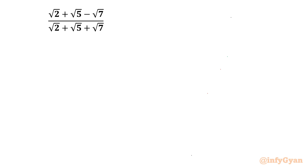Hello everyone, welcome to InfiJarn. In this very powerful video on algebraic expressions, we are going to simplify one rational expression: square root 2 plus square root 5 minus square root 7, over square root 2 plus square root 5 plus square root 7. I will simplify this by two different algebraic ways.